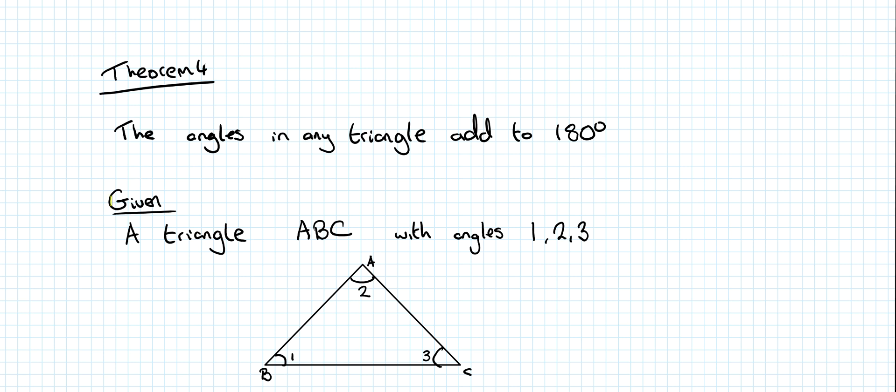You'll be given a section that says 'Given,' and then you will have to write in a triangle ABC with angles 1, 2, and 3. You could call the triangle anything, you could call it any points you want—ABC, XYZ, anything at all. You could call the angles anything you want. I just think A, B, and C are the easiest ones to work with.